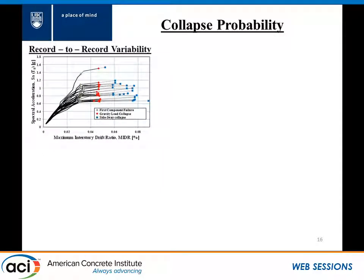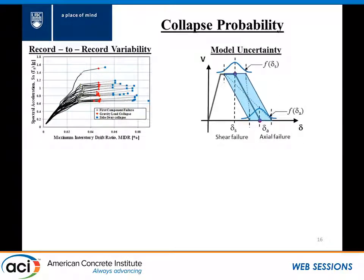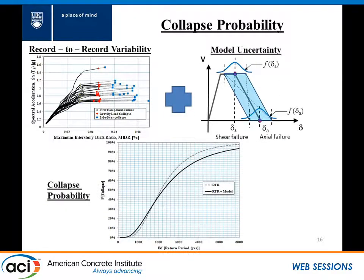Now that we have a good model for our collapse, the next step is to come up with collapse probabilities. We considered two sources of uncertainty. One is the record-to-record variability, for which we do incremental dynamic analysis: we choose a suite of ground motions, amplify them, and when we reach the collapse state — whether gravity load collapse or side sway collapse — we build a fragility curve. We also added model uncertainty. When you combine these together, you can come up with collapse probabilities.